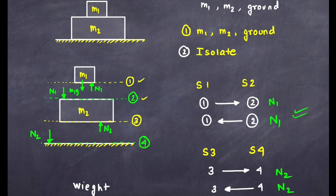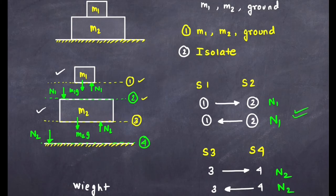The free body diagram of m1 shows N1 upward and m1g downward. The free body diagram of m2 shows N1 downward, N2 upward, and m2g downward. The free body diagram of the ground shows N1 and N2 acting on it.